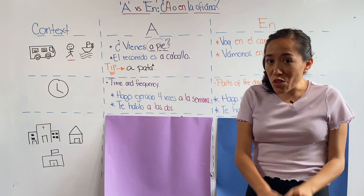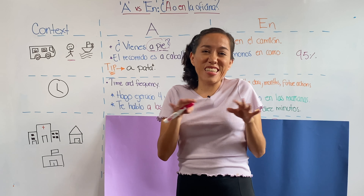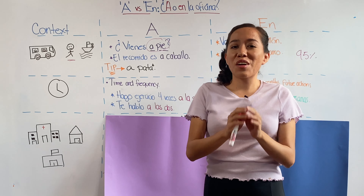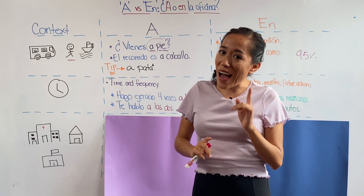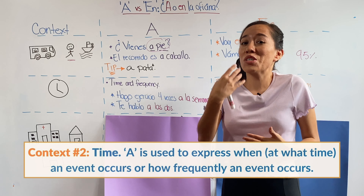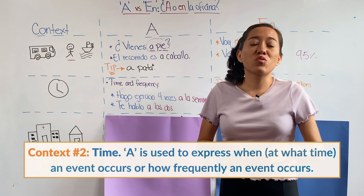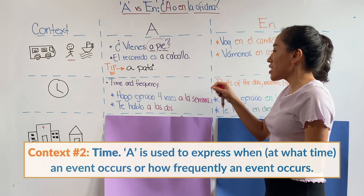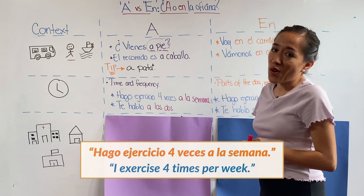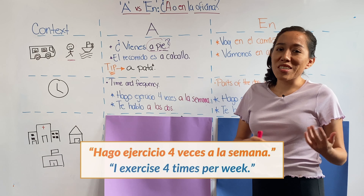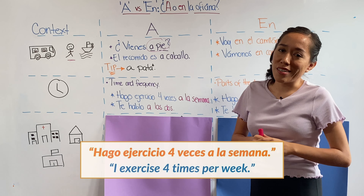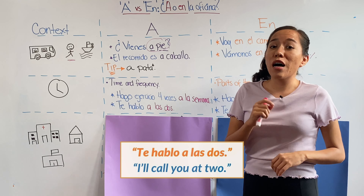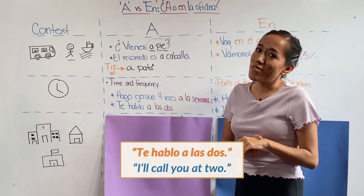The second context where you're going to use en — and it causes a little bit of confusion — is when talking about time. However, there are very specific situations when you're going to use a. When talking about time, you use a to express the time of an event or to express frequency. For example, hago ejercicio cuatro veces a la semana — I exercise four times a week. Yeah, I wish. Or te hablo a las dos — I'm going to call you at two. Don't make me wait, please.